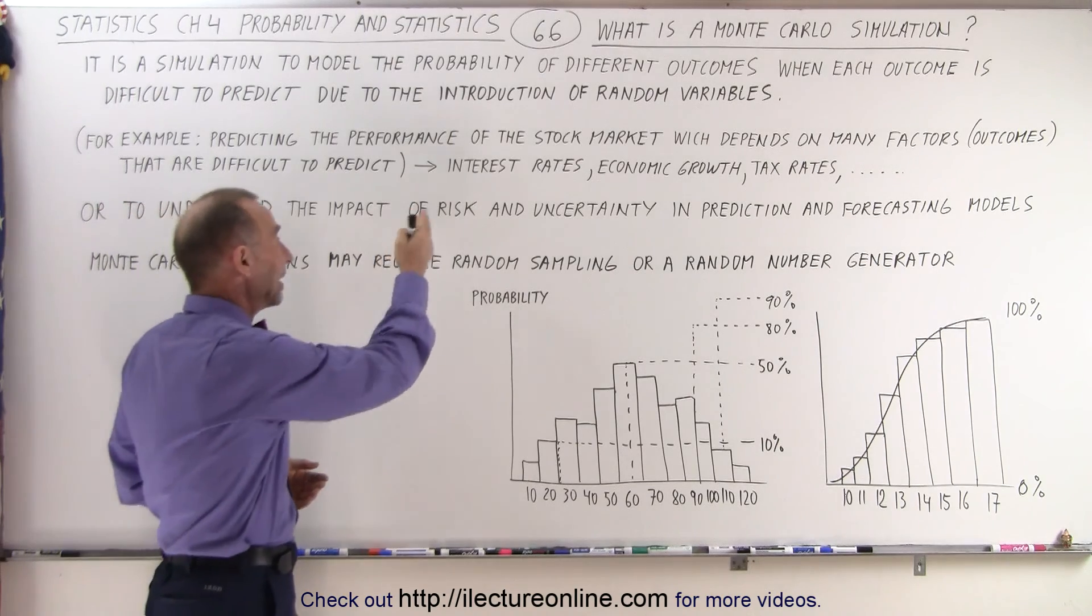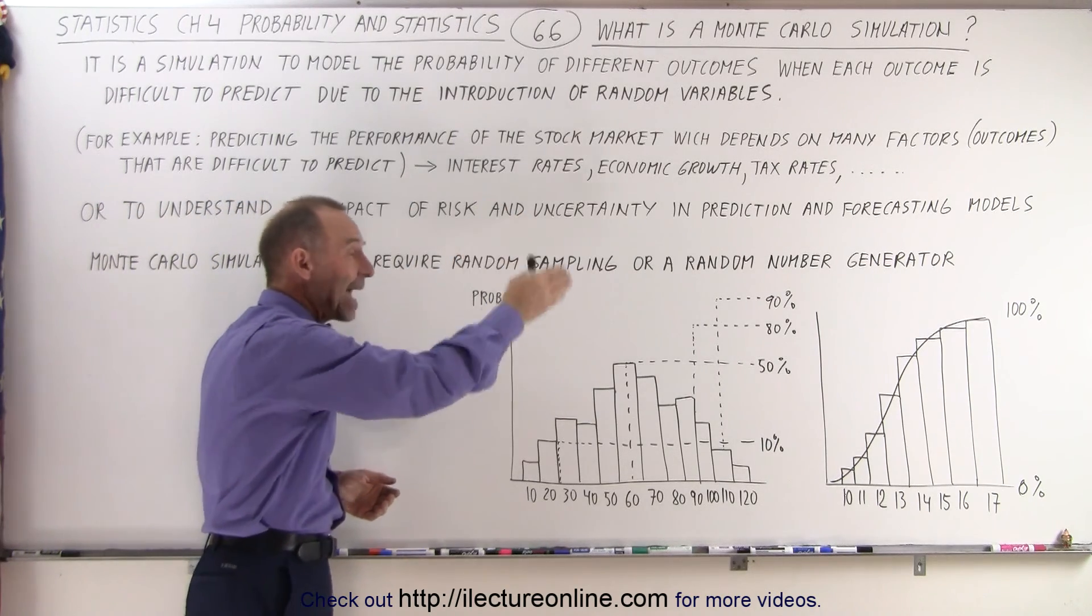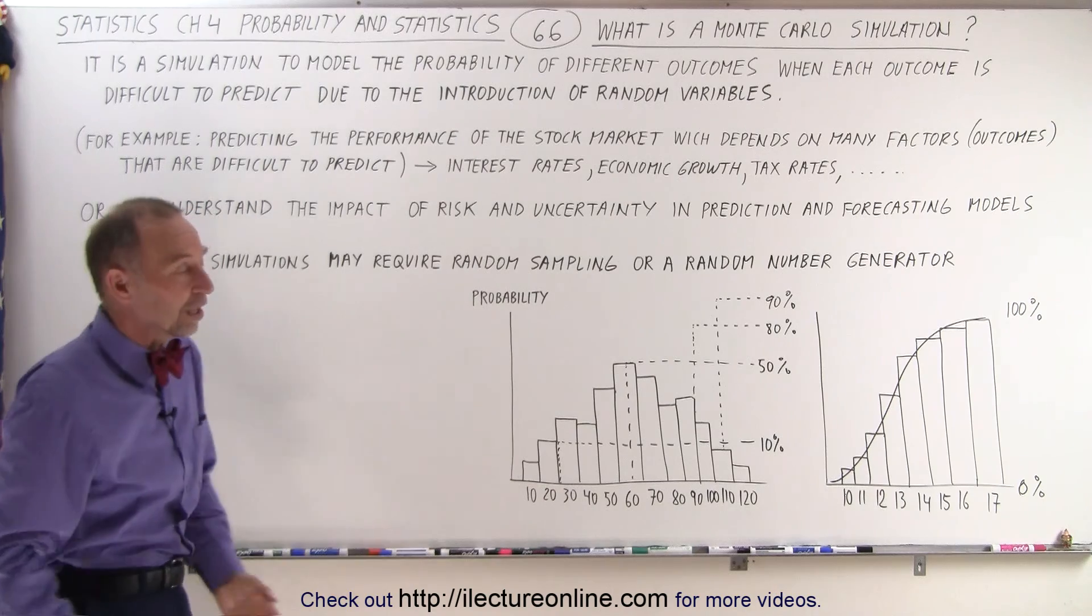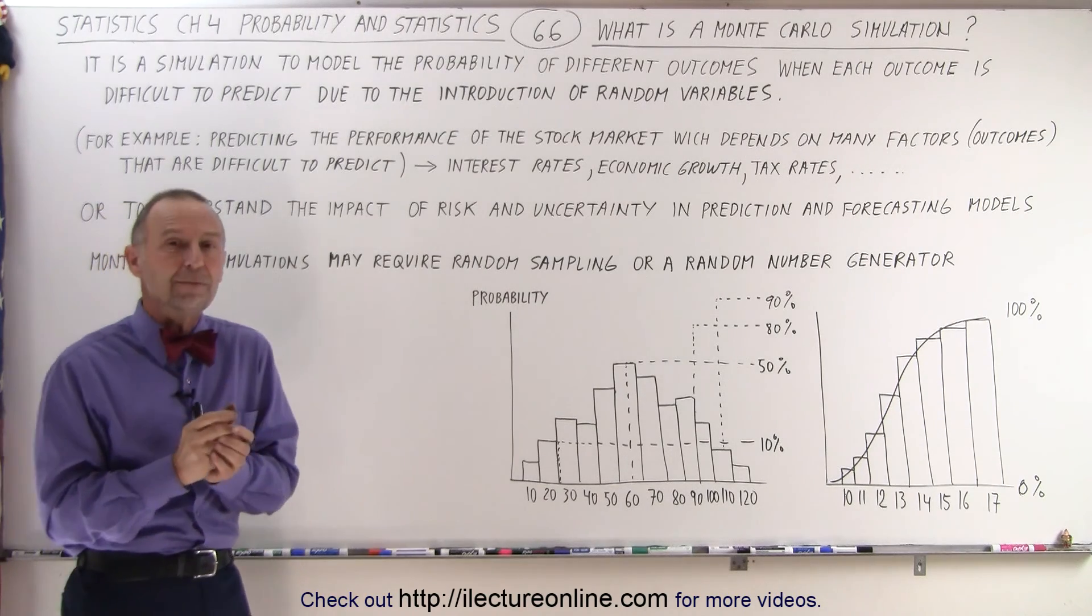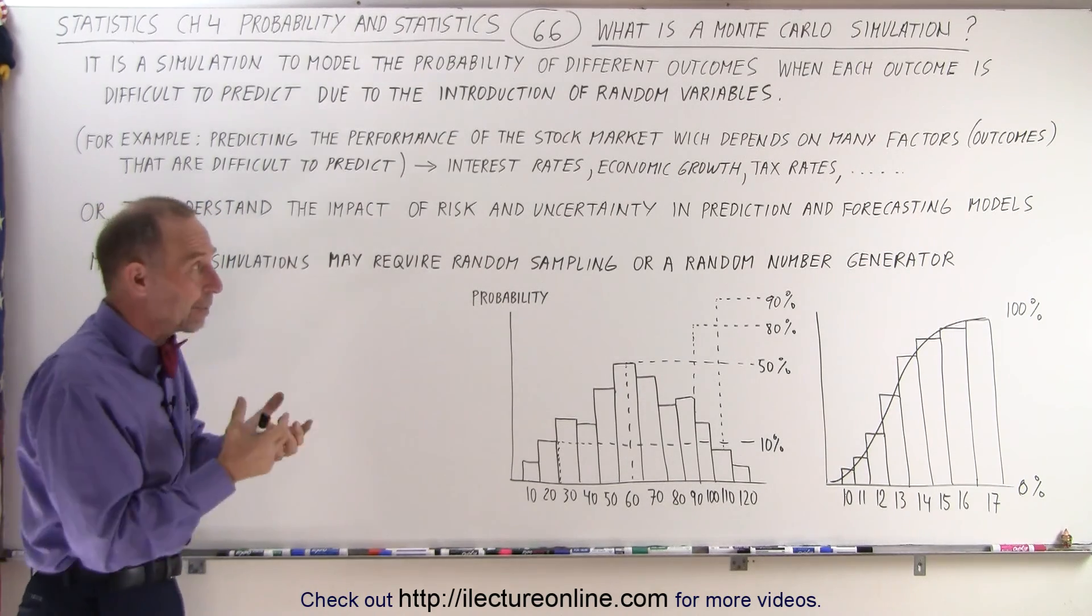For example, the stock market depends on the interest rates, economic growth, tax rates, and a whole bunch of other things, bond rates, you name it, and every one of them is difficult to predict what may happen in the future.